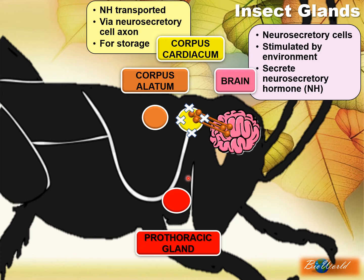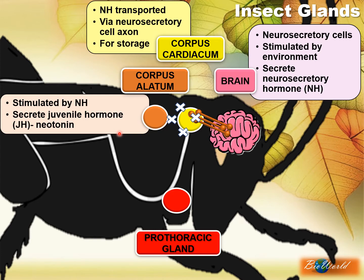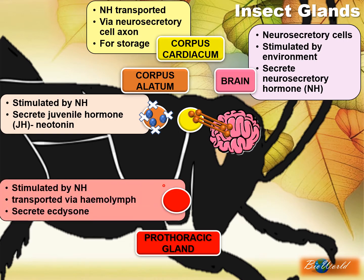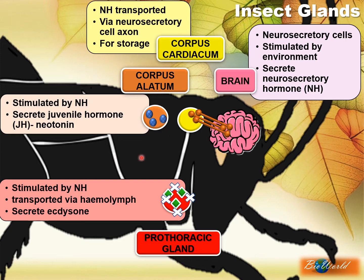Now NH will stimulate the corpus allatum and the prothoracic gland. When stimulated, the corpus allatum will secrete the hormone JH, short for juvenile hormone, also known as neotenin. NH can also stimulate the prothoracic gland, and when stimulated, the prothoracic gland will secrete the hormone ecdysone. Now the corpus cardiacum and the corpus allatum are side by side, so the NH hormone can easily diffuse to the corpus allatum. But the corpus cardiacum and the prothoracic gland are quite a distance away, so NH will first have to diffuse into the hemolymph — that is the liquid in the body of the insect — and then NH will be transported via the hemolymph to the prothoracic gland.